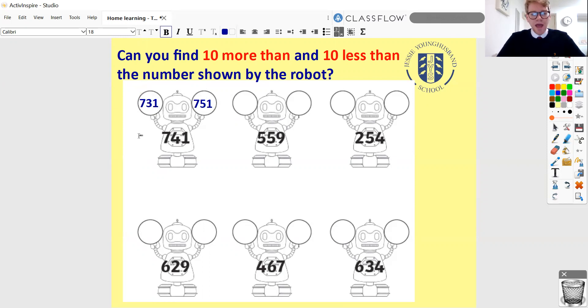Can you pause the video now and find me 10 less than and 10 more than each of these other numbers? OK, I'll go through these now quickly. So we've got 549, 569. 244, 264. 619, 639. 457, 477. 624, 644.